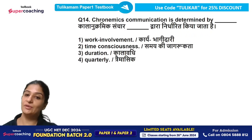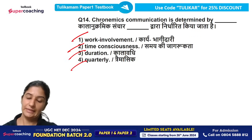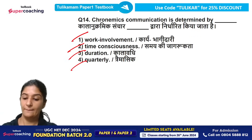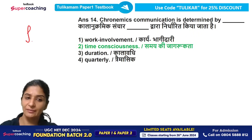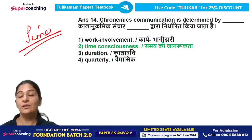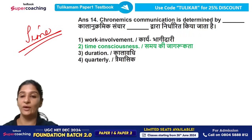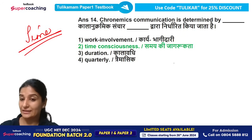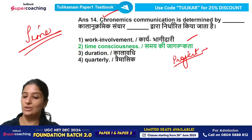Question 14: Chronomics communication is determined by — work involvement, time consciousness, duration, or quarterly. When we talk about chronomics, we are talking about something associated with time — how well we coordinate with time, how much respect we give to time, whether we are late, early, before time, or on time. These all come under time consciousness. Submitting a project before the due date is an example of time consciousness, which falls under chronomics communication.